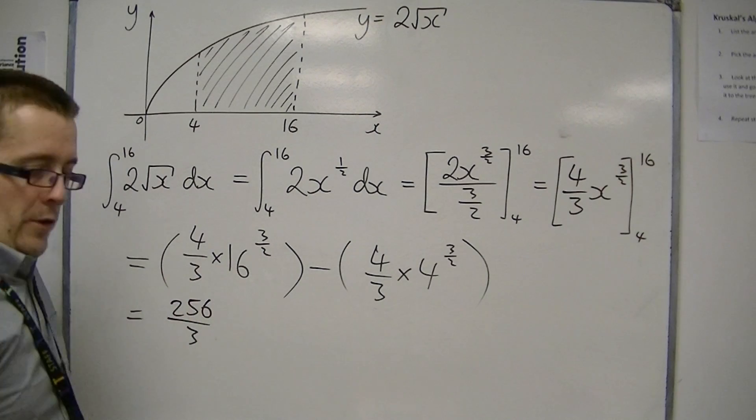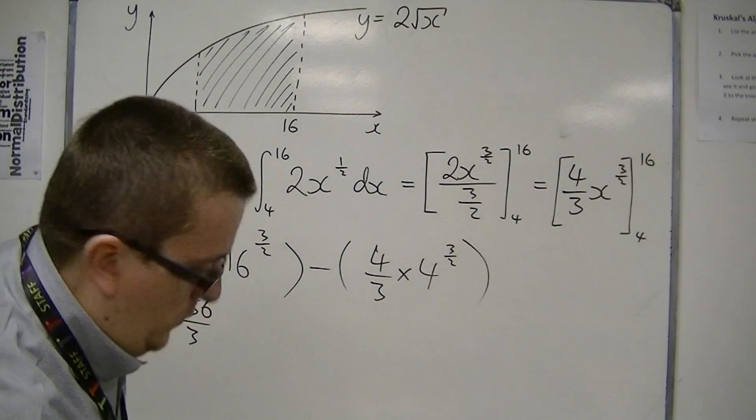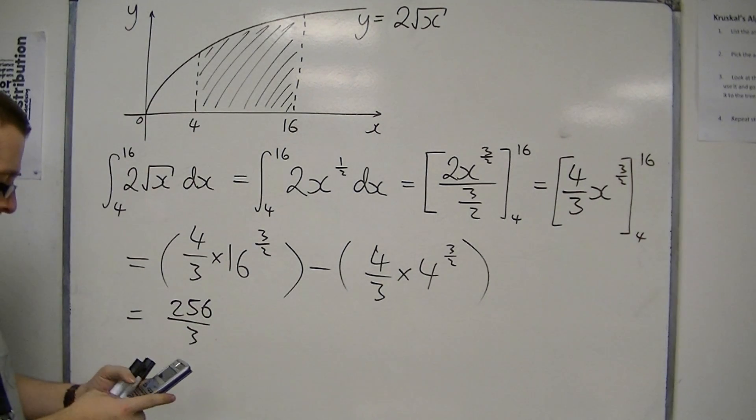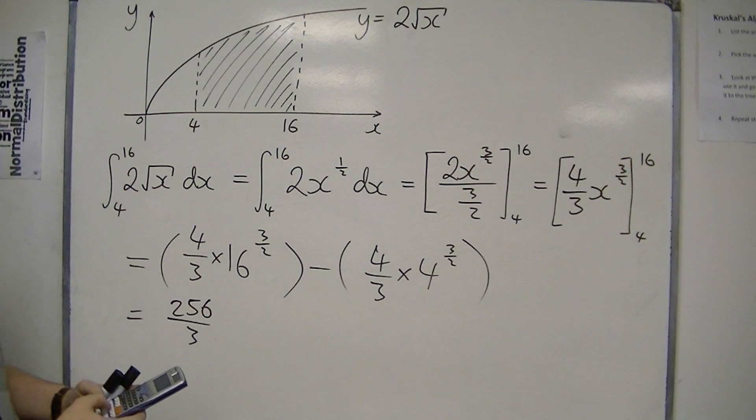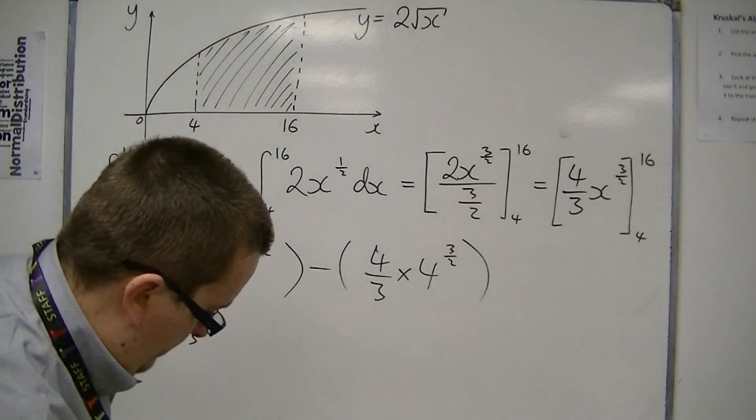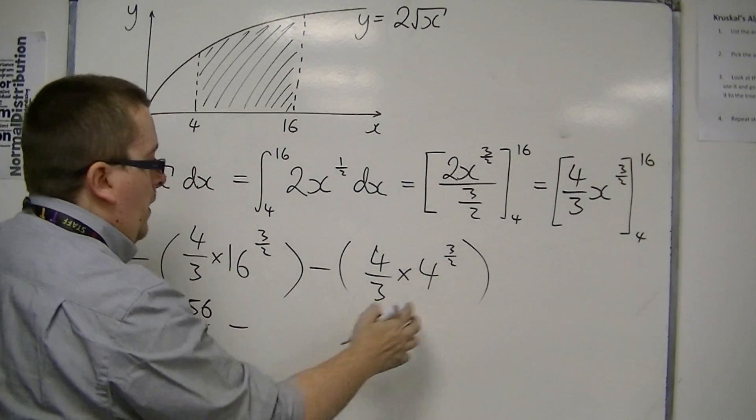You can check that on a calculator. Although my mental arithmetic isn't too bad, sometimes I don't trust myself. So yes, I've got that wrong. And then this one, we've got 4 to the 3 halves.